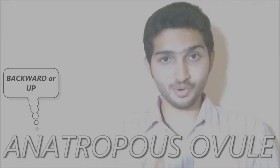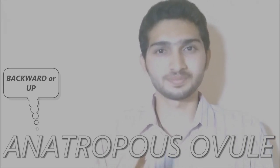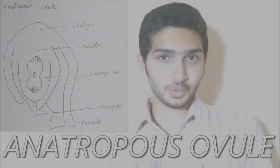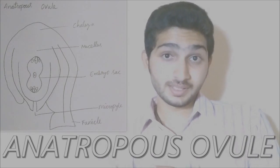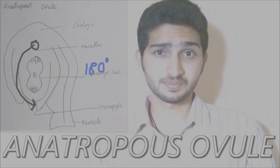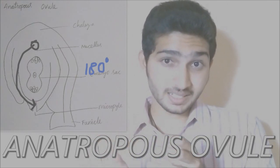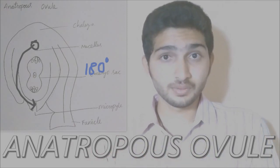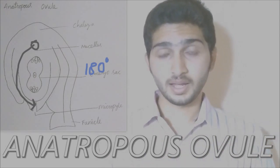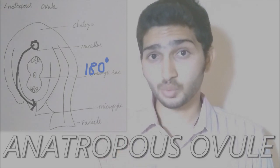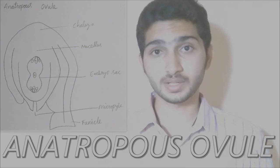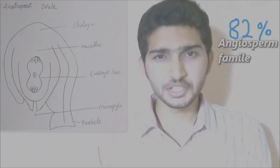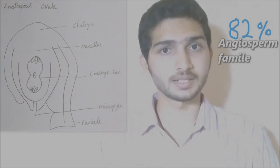Second one is anatropos ovule. 'Ana' means backward and up. In this type, the micropyle, chalaza, and funicle are present, but it takes about 180 degrees curvature, and the micropyle comes downwards, reaching very closer to the funicle. This is the main difference between orthotropos and anatropos. This type of anatropos ovule condition is observed in 82% of angiosperms. Examples include members of Gammabetale.